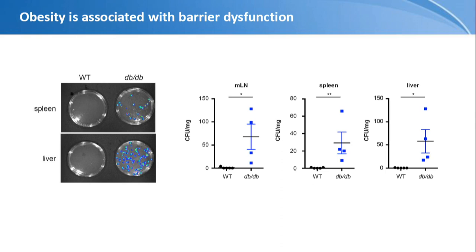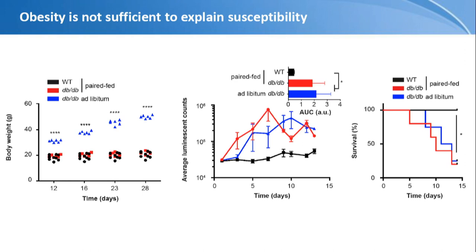At this stage, we thought the story was simple: leaky gut caused by morbid obesity. So we did a paired feeding experiment, taking wild-type and DBDB mice, but limiting the DBDB mouse's food intake to what the wild-type littermates ate, thereby preventing obesity. Now we had a lean, leptin receptor-deficient mouse. To our surprise, even though these mice were lean, they were still susceptible to the infection — bacteria still grew as much as in the fat control mice, with as much mortality. It seems the connection isn't simply obesity causing enteric infection susceptibility.